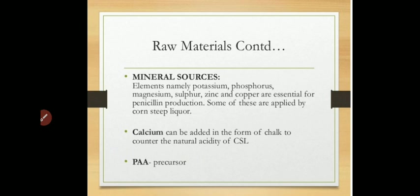For penicillin production, a calcium source is also required. Calcium can be added in the form of chalk to counter the natural acidity of corn steep liquor — chalk is added to the medium to control that natural acidity.